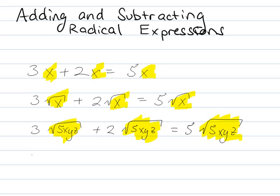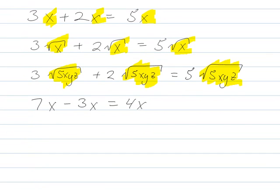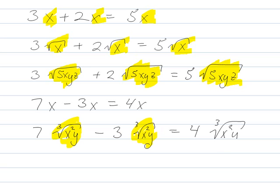Similarly, 7x minus 3x is 4x, right? So by the same logic, 7 cube root of x squared y minus 3 cube root of x squared y. 7 blah minus 3 blah, as long as the blahs are the same, is 4 blah.